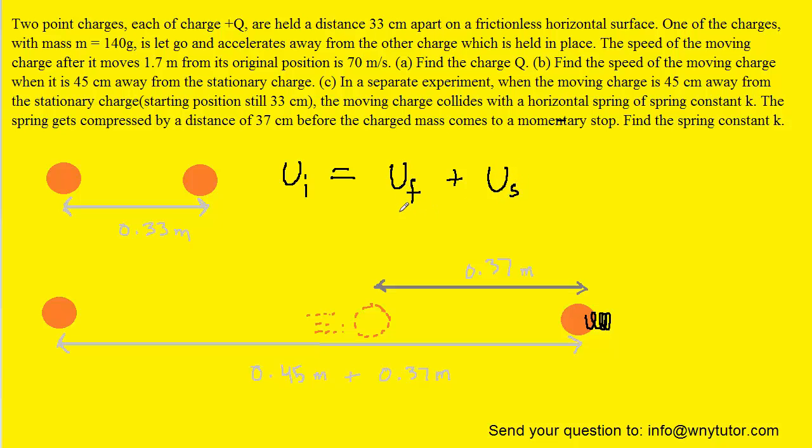Let's subtract the Uf over to the other side. We substitute in for Ui the expression KQ squared over the initial distance of 33 centimeters, and Uf will be KQ squared over the final distance of 82 centimeters. The spring potential energy is one-half times Kx squared, where x is the distance that the spring compresses. Let's set that up.